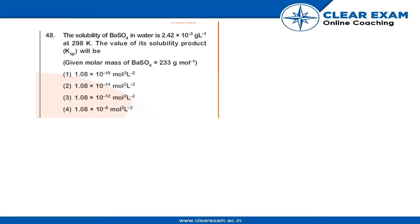or 1.08 × 10⁻¹², or 1.08 × 10⁻⁸. The molar mass of BaSO₄ is given as 233 grams per mole. So the correct answer is the first one: 1.08 × 10⁻¹⁰.